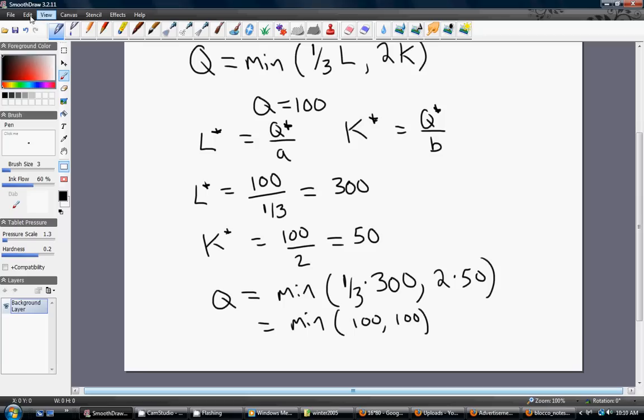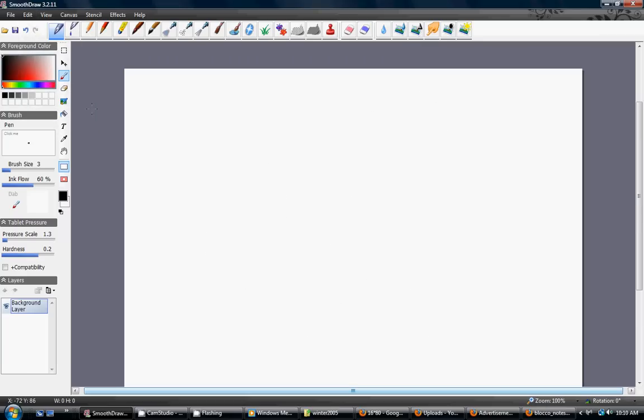Let's look at another example. There may be a simpler example. The quantity of output equals the minimum of L and K.